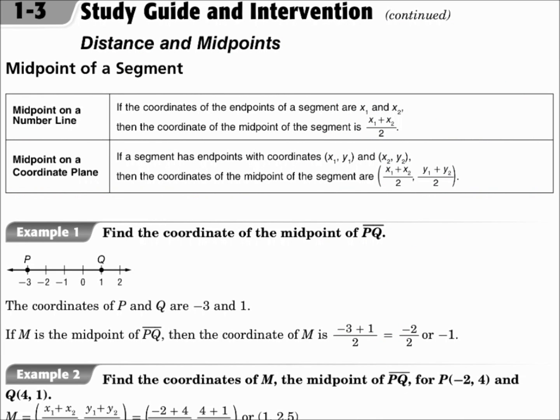Midpoint of a segment. The midpoint on a number line, you take the coordinates, add them together, and divide by 2. On the coordinate plane, the midpoint is found by adding the x's and dividing by 2, and adding the y's and dividing by 2. Your answer for each of these is a point. It is the midpoint, the point in the middle of the segment.